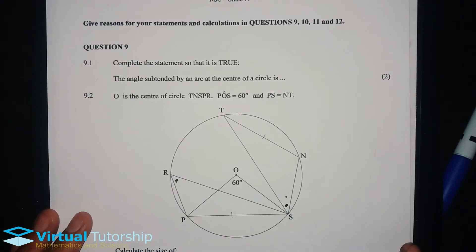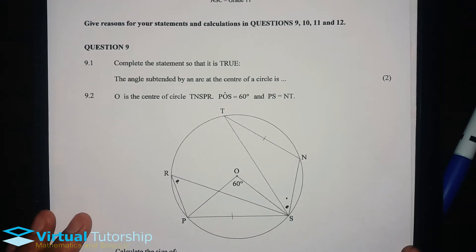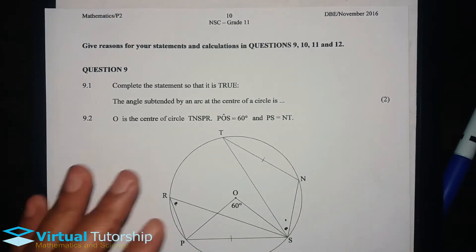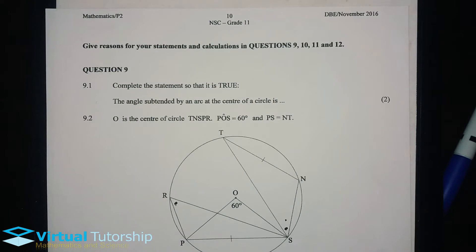Okay, so we are doing question 9 for a Grade 11 question paper, Mathematics Paper 2. It's a Euclidean geometry problem, so we need to provide reasons as we solve.